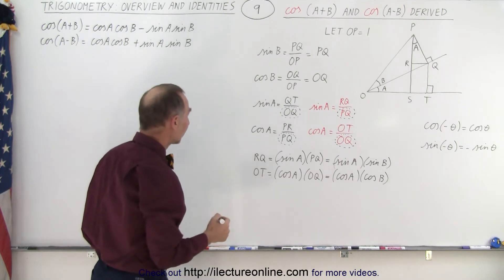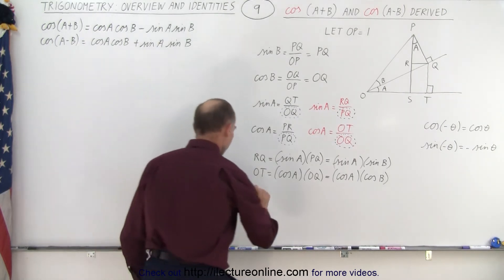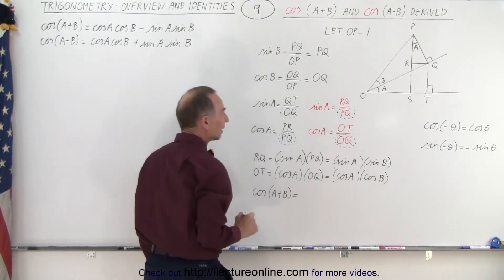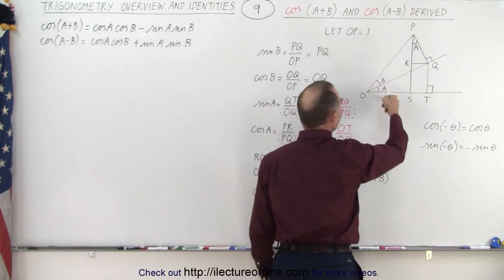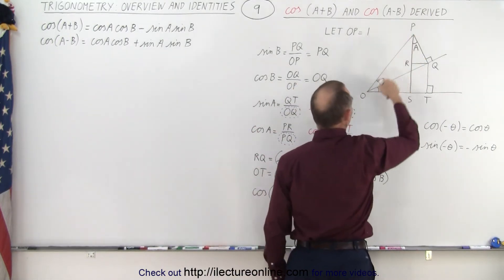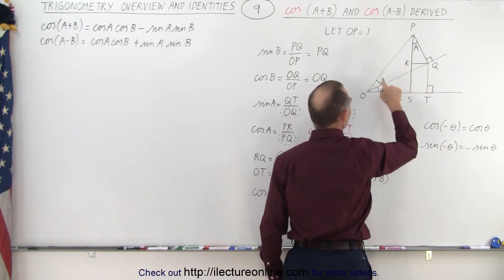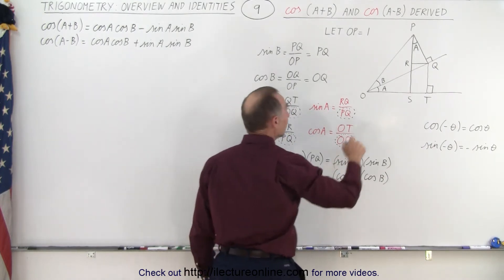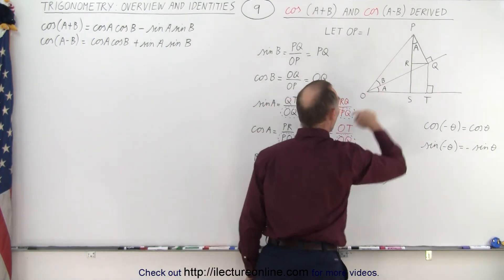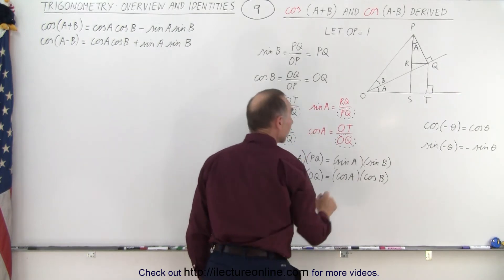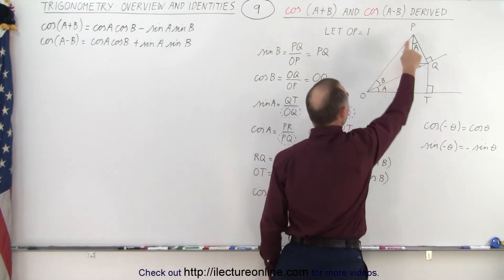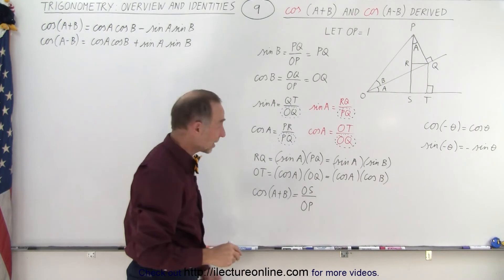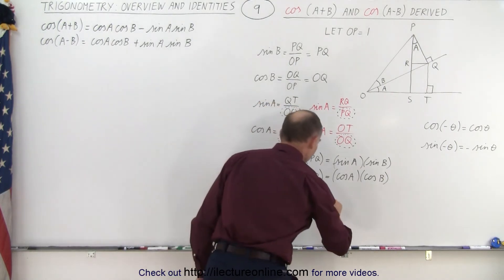So now we need to define the cosine of A plus B. With angle A plus B, we use this large triangle, and the cosine of A plus B is the adjacent side OS divided by the hypotenuse OP. Notice that OP was arbitrarily set equal to 1, so this simplifies to just OS.